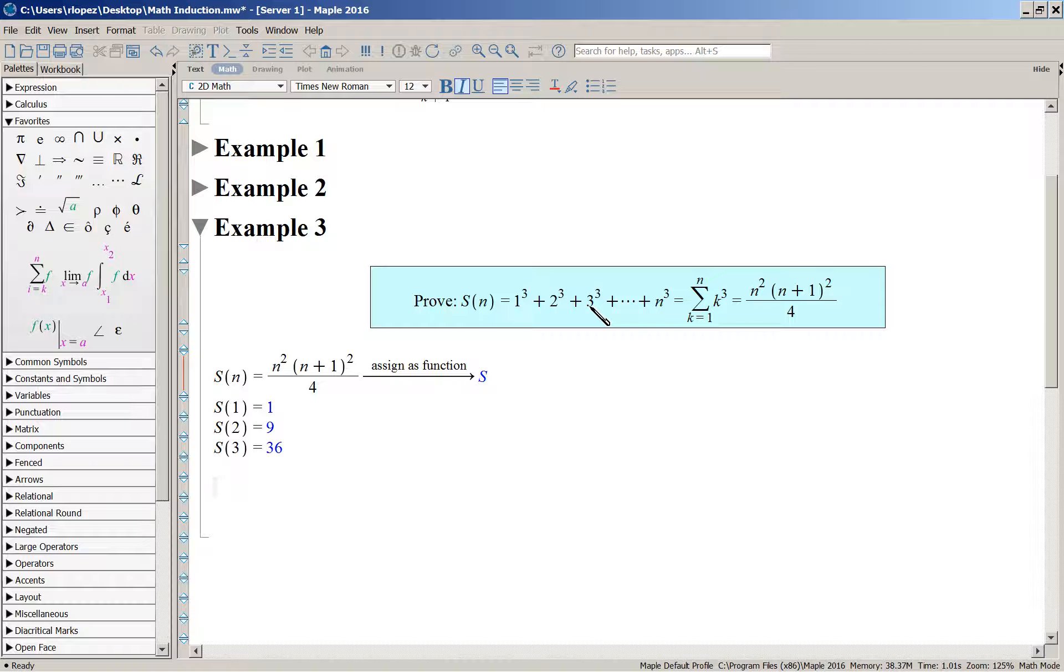So what's the Kth statement, S of K? That's one-fourth K squared times K plus one squared. And we want to use that to establish the truth of the K plus first statement. Now the K plus first statement is the Kth statement with K plus one cubed added on. So here is your S of K. And to that we add K plus one, the next number cubed.